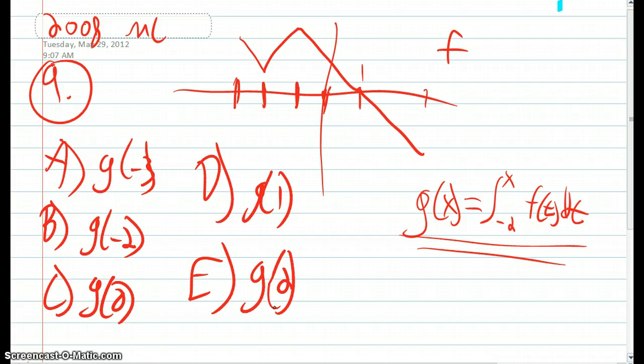So the starting place is negative 2 right here. Here's 1, negative 3, 0, and 2.